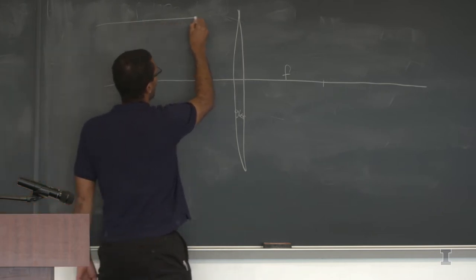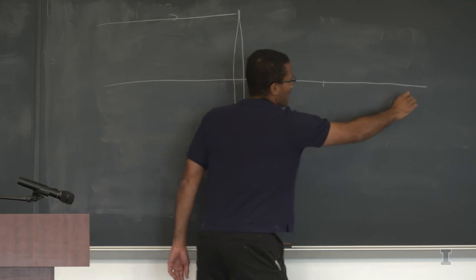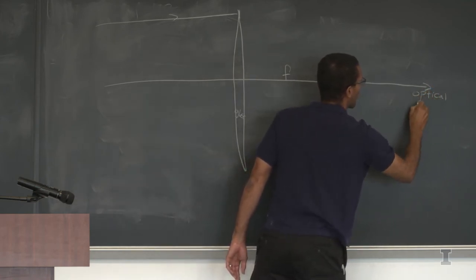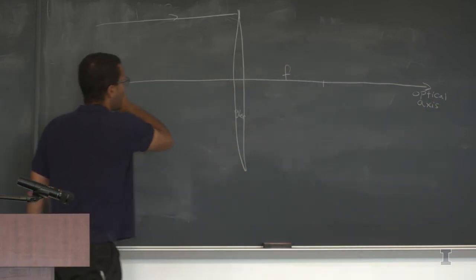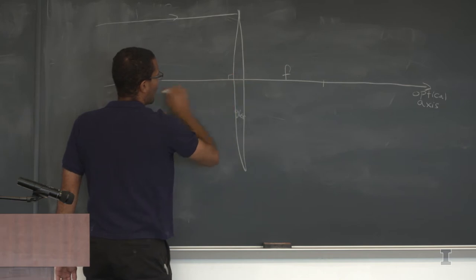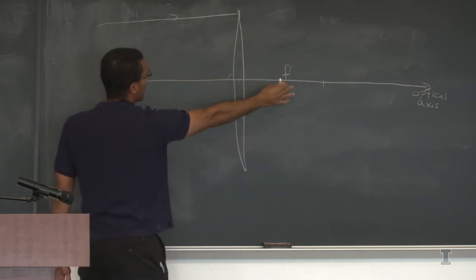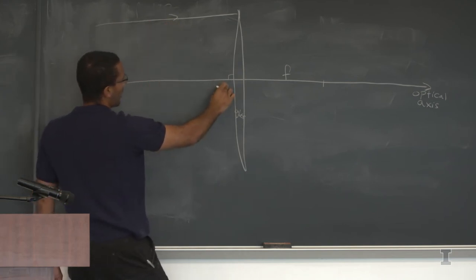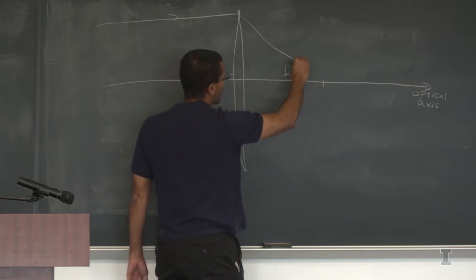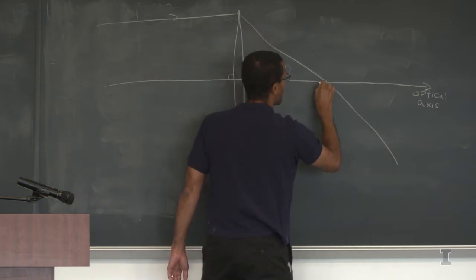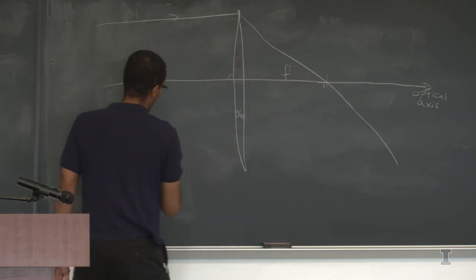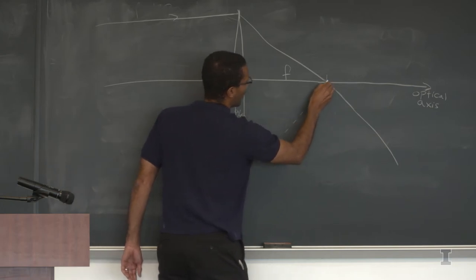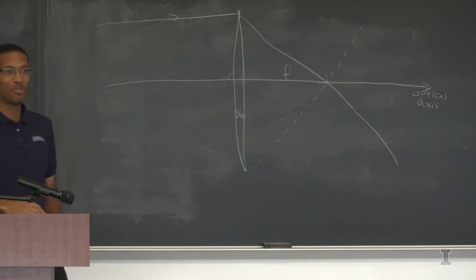If I shine light parallel to the optical axis — the axis perpendicular to the lens going through its center — it focuses at the focal length F. Light bends like this through the lens. Similarly, a ray coming in parallel from any height also converges through that focal point. This is why people use magnifying glasses to focus sunlight and burn things.